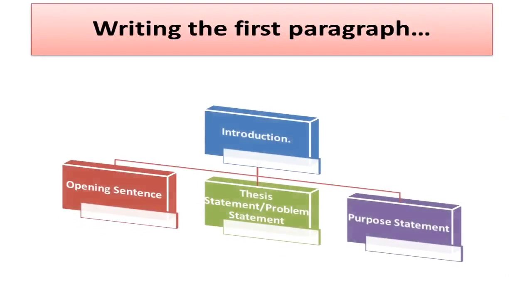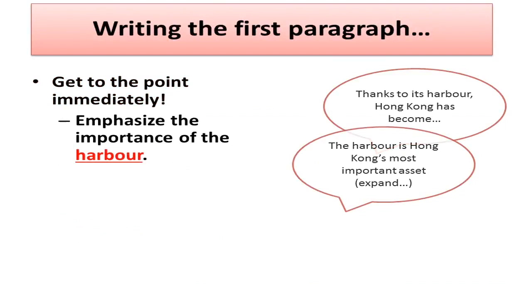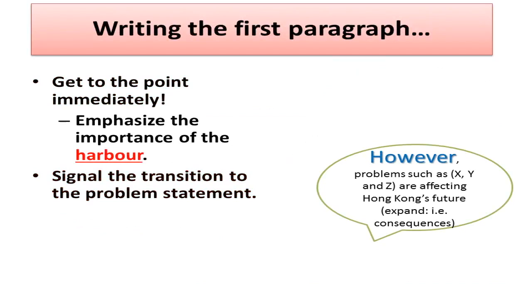The first paragraph of your introduction is quite important, because it helps you set the scene for the entire discussion. There are many ways of writing this first paragraph, of course. I am going to show you only one way here. You want to get to the point straight away, because you have a limited number of words for the entire assignment, and you do not need a long introduction, right? So, try to use the words Hong Kong and harbour in your first sentence, and use this first sentence to provide some focus, for instance, by emphasizing the importance of the harbour for Hong Kong. Next, signal the transition to the problem statement, using a connector like however, which indicates a contrast between a positive idea, i.e. the importance of the harbour, and a negative one, i.e. the problems you want to discuss.